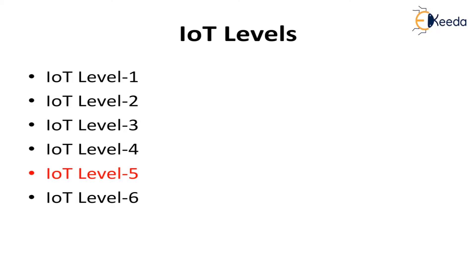The IoT device allows remote sensing, actuating, identification, and remote monitoring capabilities. Resources are software components on the IoT device for accessing, processing, and storing sensor information or controlling actuators connected to the device. Resources also include software components that enable network access for the device.